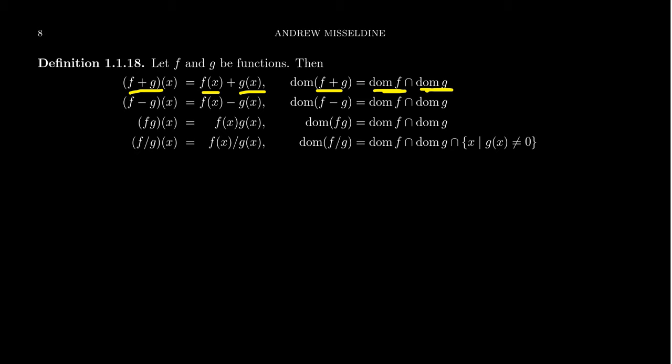So the only way we can find f plus g of x is that f of x has to be a number and g of x has to be a number. So x has to be inside the domain of f and it has to be inside the domain of g. And so if we have those considerations, the domain of f plus g will be the intersection—that's what this symbol right here means, the intersection, it's like an upside down union symbol—the intersection of the domain of f with the domain of g will be the domain of f plus g. That is, if f of x is defined and g of x is defined, then we can define f plus g of x. We do the same thing for subtraction. The domain of f minus g will be the intersection of the domains of f and g. The domain of f times g will be the intersection of the domains of f and g.